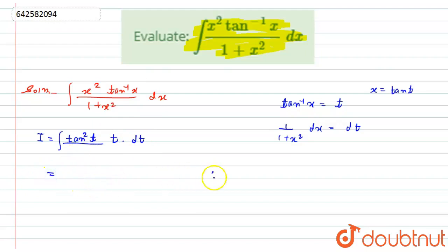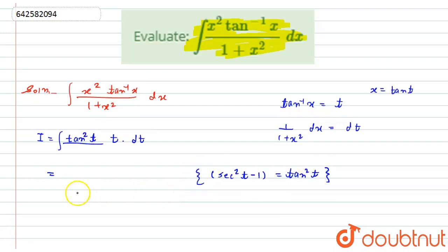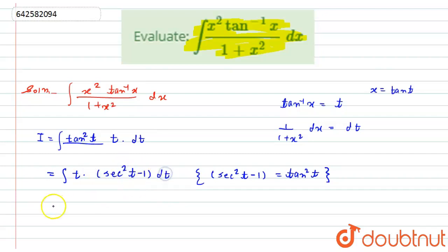Now, can I replace tan squared of t? Yes — using the identity, tan squared of t equals sec squared of t minus 1. So the integral becomes the integration of t times (sec squared of t minus 1) dt.